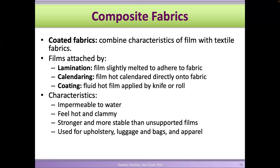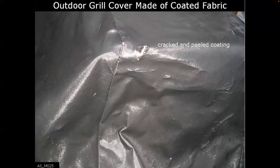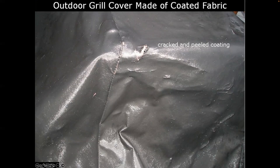Coated fabrics feel hot and clammy because they're not very breathable. We use them for upholstery, luggage, bags, apparel, and coats. For example, this outdoor grill cover is made of coated fabric — you can see the film on the top surface, and if you peel the film, you can see a woven material on the bottom coated with a film. The film protects it from rain, water, and rotting because it's water impermeable.